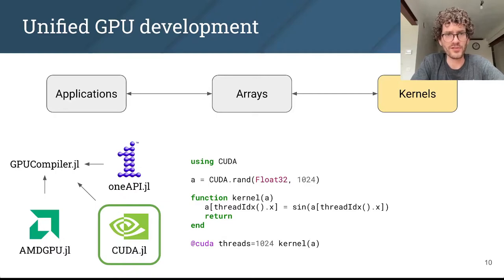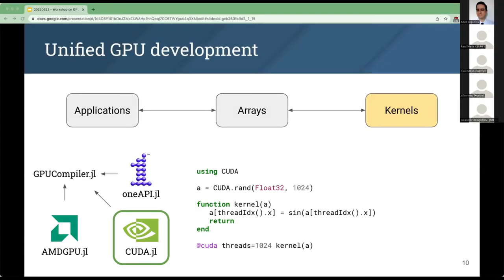In the same way that the array abstraction level reuses quite some code across all of our GPU backends by building on top of the GPUArrays package, lots of the compiler functionality is shared across backends because of the GPUCompiler package. For the rest of this workshop, I'll be focusing on CUDA.jl, even though the other packages have similar capabilities and programming interfaces. CUDA.jl is the most mature package, and we have a whole bunch of tools from NVIDIA like profilers, memory sanitizers, which I'll demonstrate later.